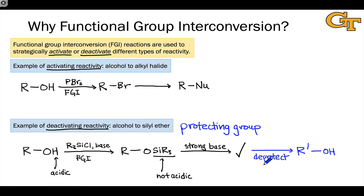The remainder of the videos in this series focus on different functional groups that can be protected and deprotected and the synthetic conditions used to achieve those steps. Broadly speaking, keep in mind that all of these processes from a retrosynthetic point of view are functional group interconversions — converting one functional group to another, doing some chemistry, and then converting the protected functional group back to the original in a deprotection step.